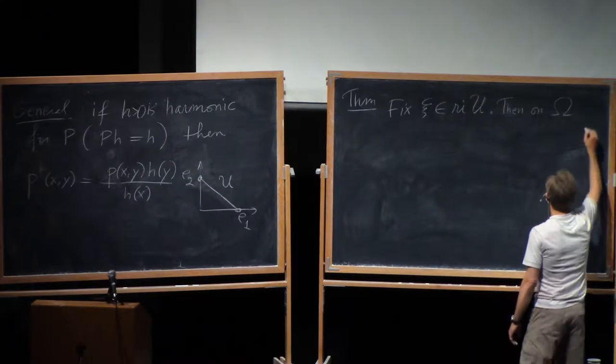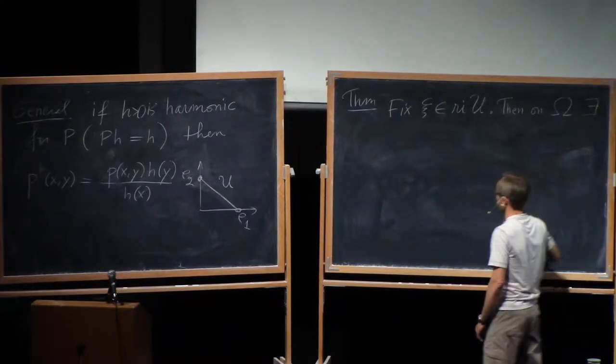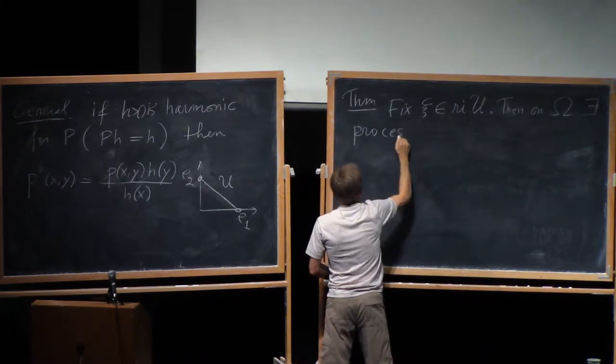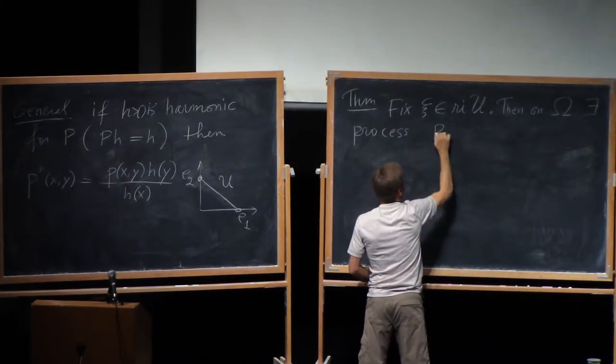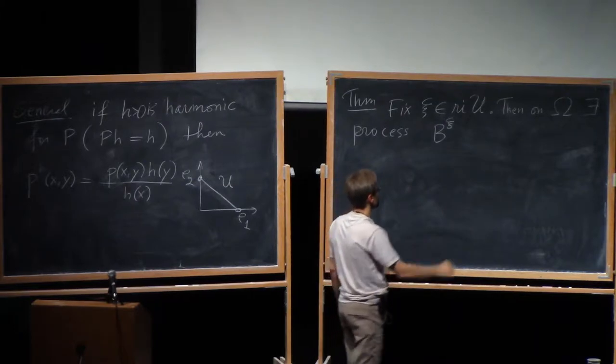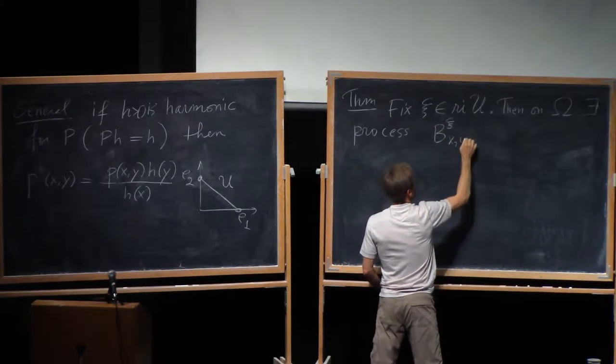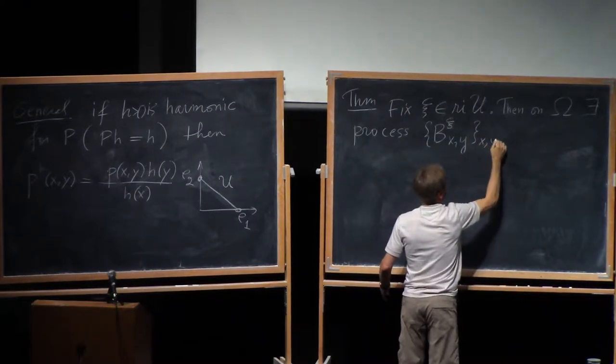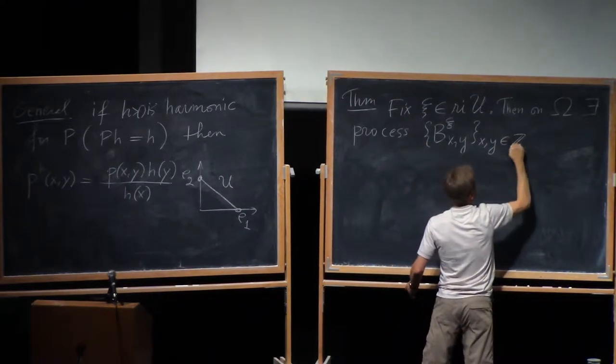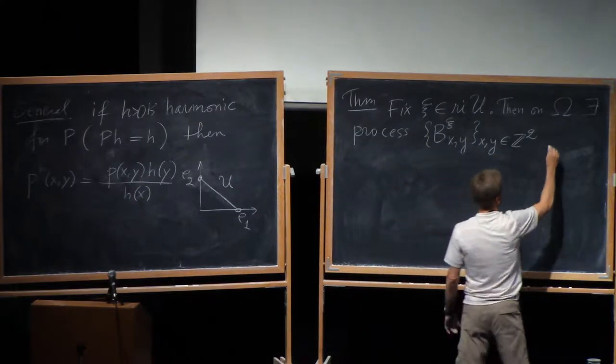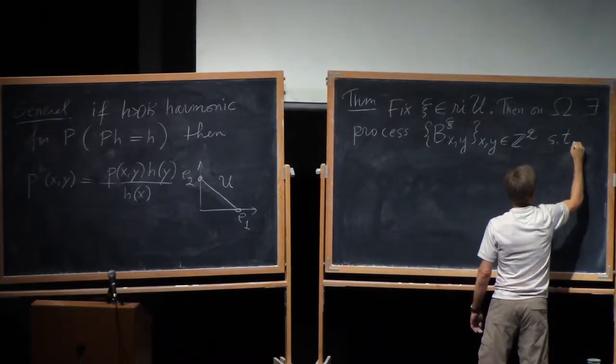And then the statement is that on the space where those weights live. So that description is gone now, but it's the weights omega. On omega, there is a stochastic process. Then I'll denote by B superscript C, which is sort of a label. And then the process itself is indexed by lattice points, x, y. And this process has the following properties. So let's say such that.